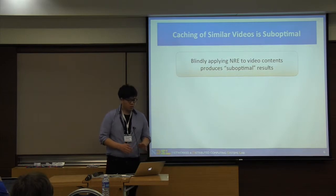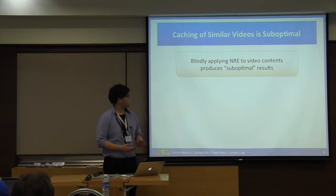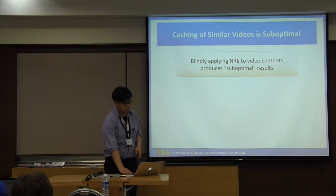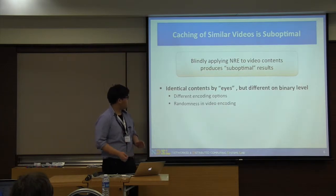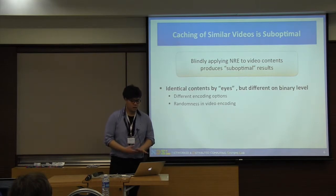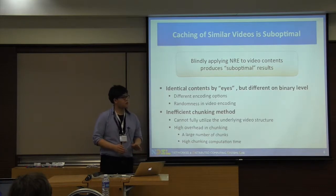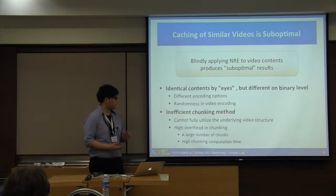We showed that network redundancy elimination is good for reducing redundant traffic. However, when it comes to video content, applying NRE to video content produces suboptimal results. We found two reasons behind it. First, even for similarly sourced videos, they have different binaries since they use different encoding options, or randomness in the video encoding process could produce different binaries, reducing the effectiveness of caching. Second, existing chunking methods are inefficient for video content since they don't fully utilize the underlying structure of video, leading to high overhead in terms of large numbers of chunks and computation time.